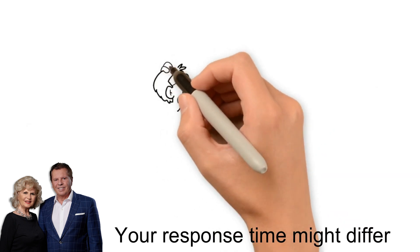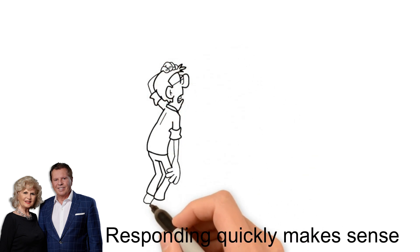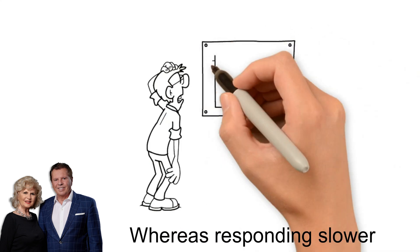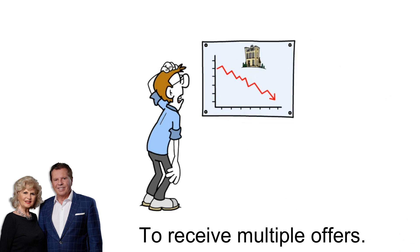As a seller, your response time might differ depending on market conditions. Responding quickly makes sense in a down market, whereas responding slower in a thriving market could give the seller more time to receive multiple offers.